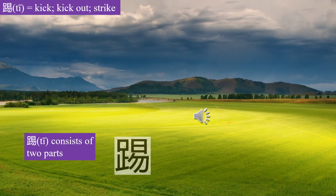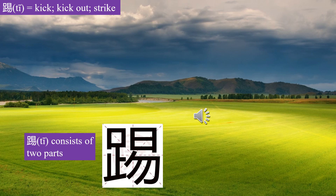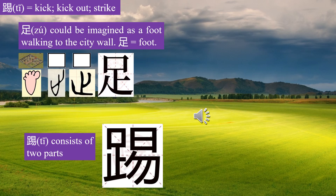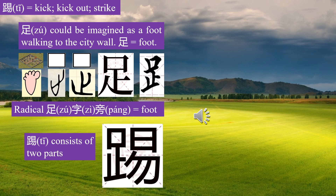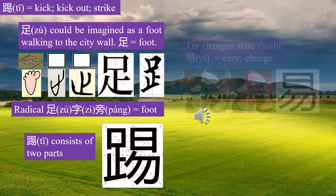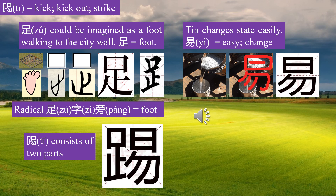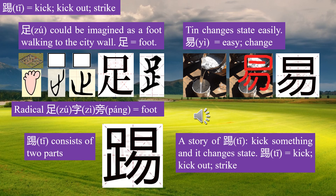The character 踢 (Ti) consists of two parts: 足 (foot) — which can be imagined as a foot walking to a city wall — and Yi meaning easy/change. A story of Ti: kick something and it changes state. Ti means kick, kick out, strike.